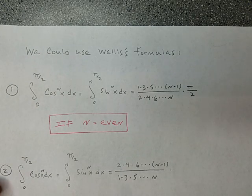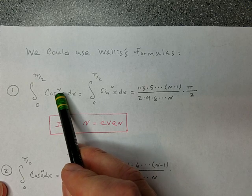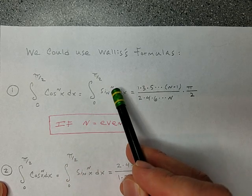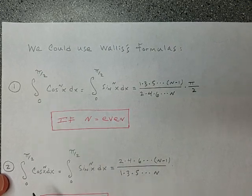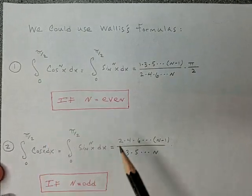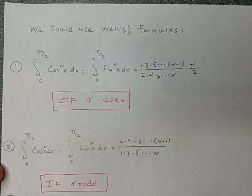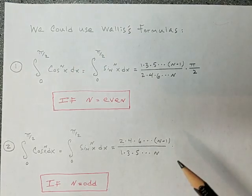So it turns out whether you had cosine to some power n or sine to some power n by symmetry, those would be equal. So what the ultimate result of these definite integrals are just depends on whether that original power was even or odd.